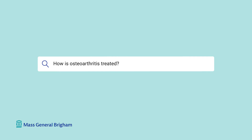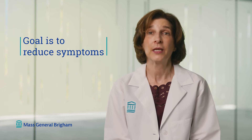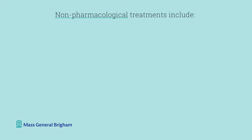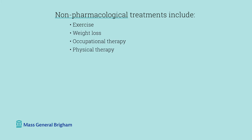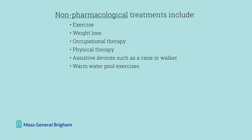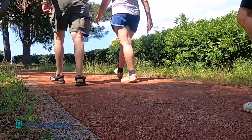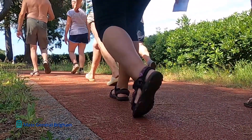How is osteoarthritis treated? The goals for treatment are to reduce symptoms — especially pain and stiffness — and to improve or maintain function. Non-pharmacological treatments include exercise for strengthening, weight loss, occupational therapy, physical therapy, use of assistive devices such as a cane or walker, warm water pool exercises, a hot tub, paraffin baths for hands, ice, supportive footwear, a neck pillow, and good mattress support during sleep. Exercise helps strengthen the muscles around the joints — for instance, walking is an excellent form of exercise to strengthen the muscles around the knee. It's important to keep moving, but listen to your body.